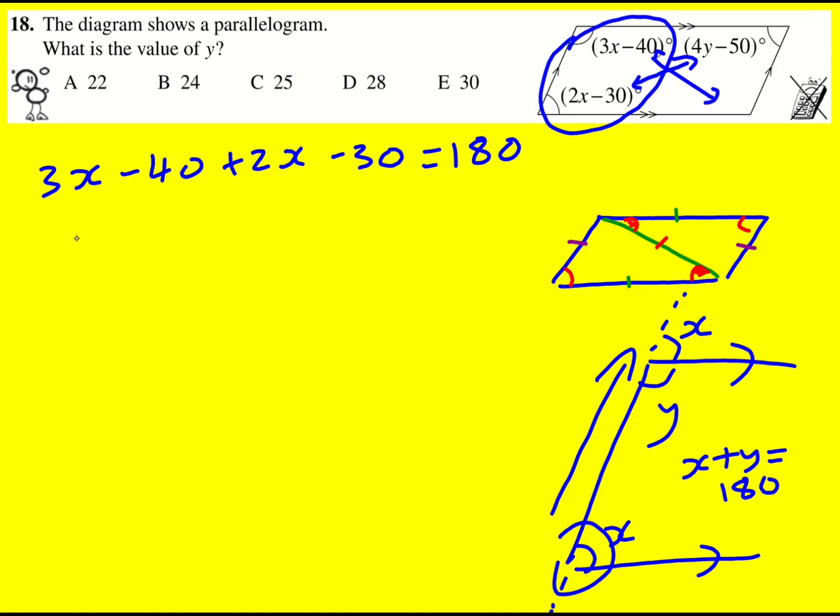5x minus 70 is equal to 180 and we've got an equation to solve. Now I do it using the balancing method. I say we're going to add 70 to both sides. So that means when I add 70 to the left-hand side, it disappears from here and it's going to be over here. You might be more likely to solve it by saying I'm going to add 70 onto the other side or I'm going to do the inverse operation, whatever. But in any case, we get 5x is equal to 250. That means x is equal to 50.